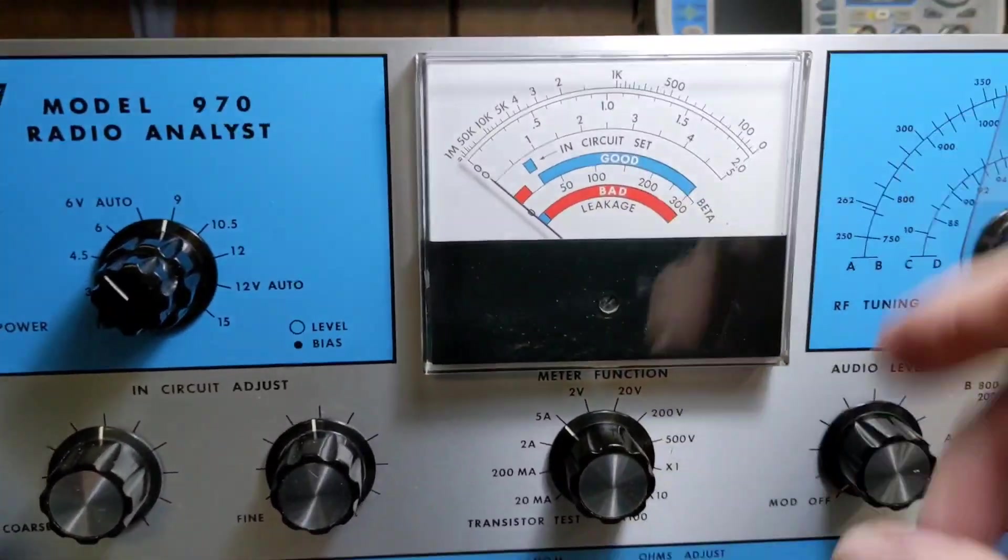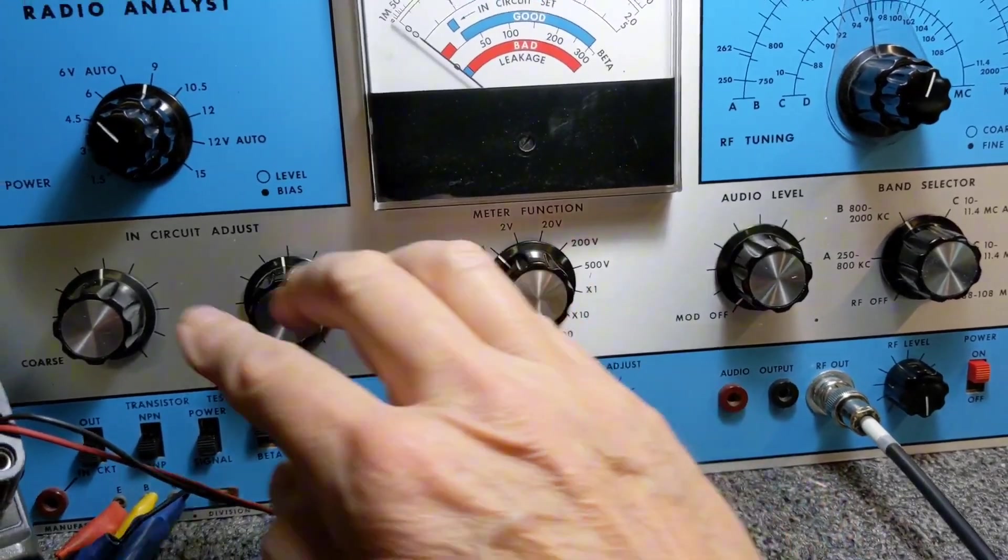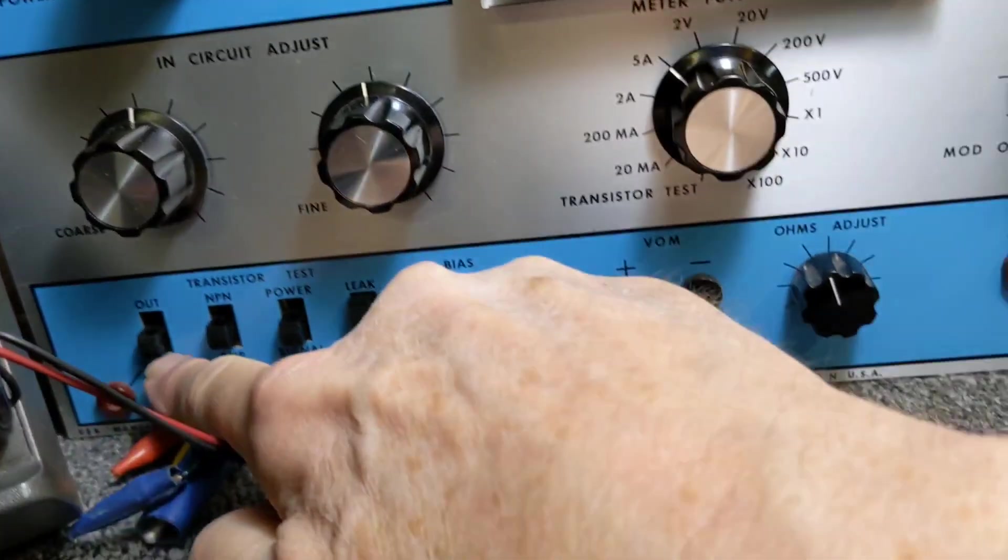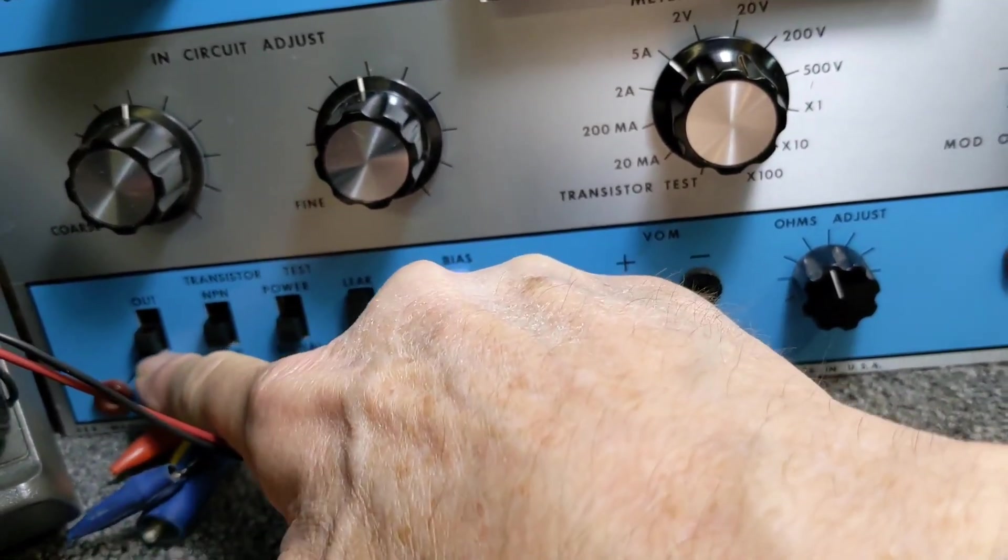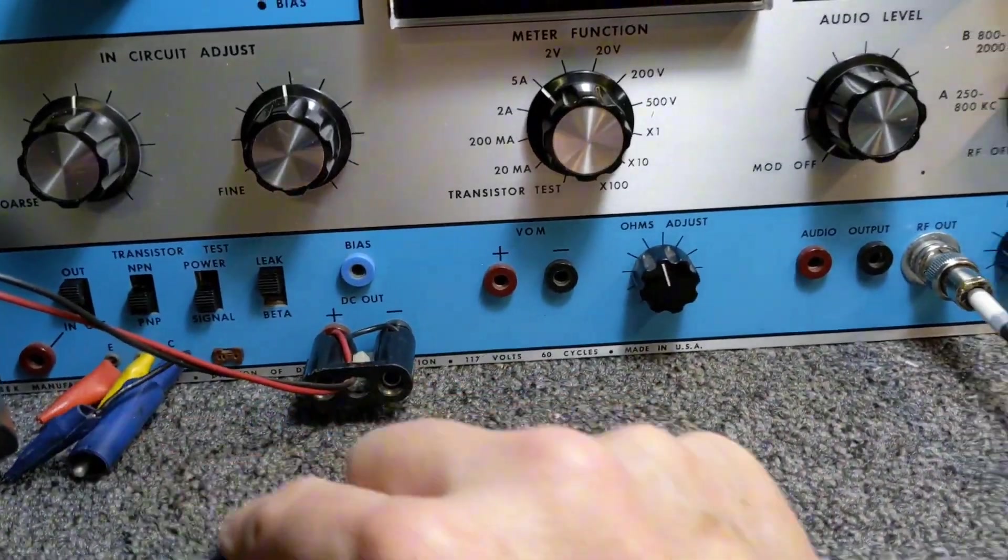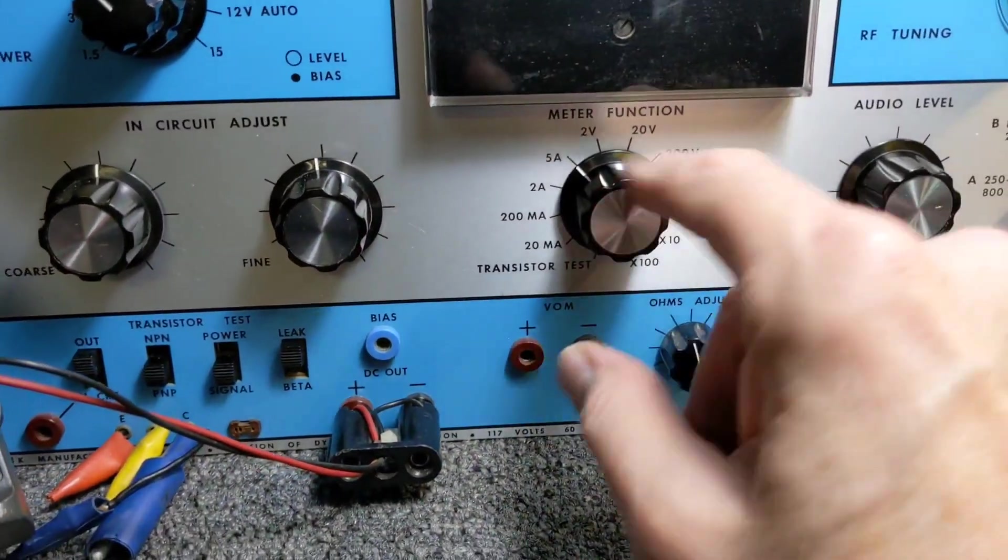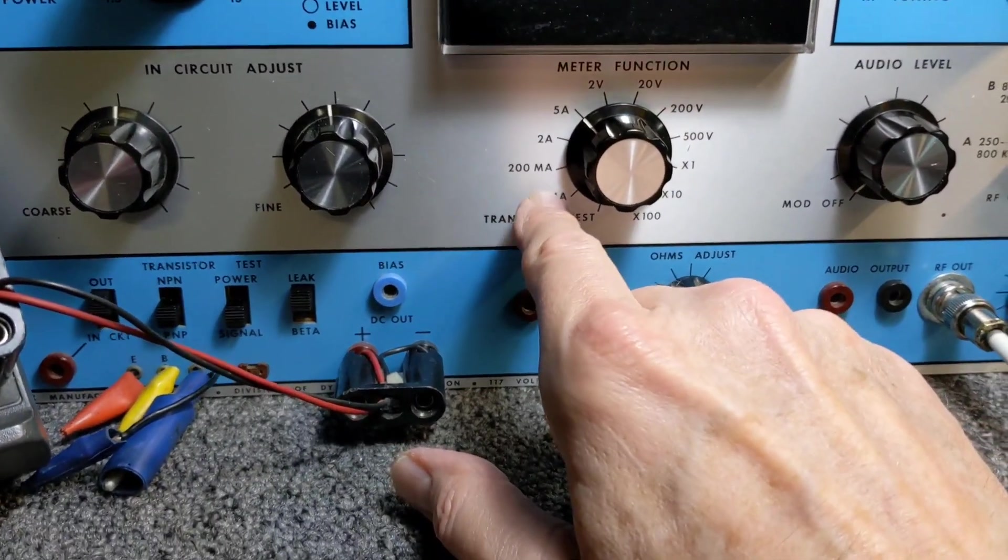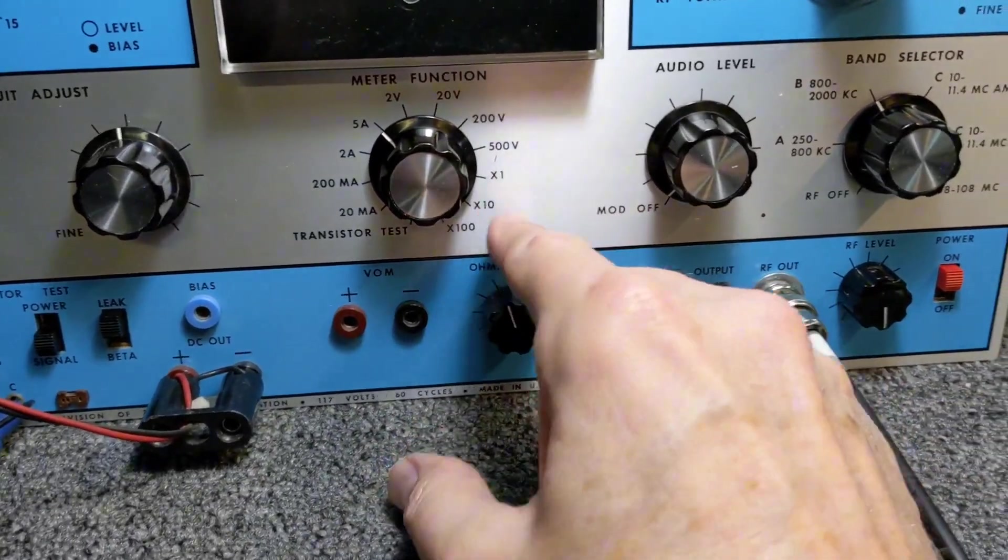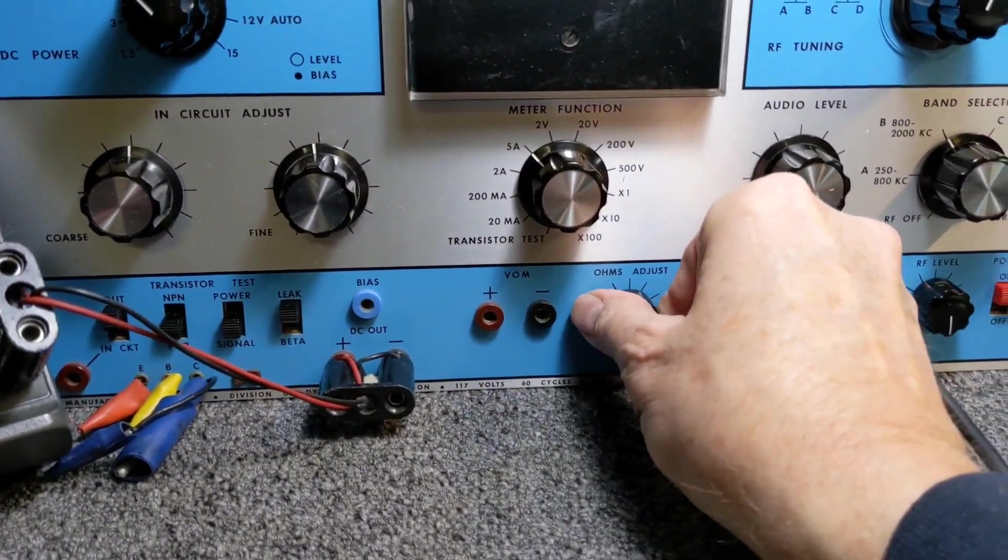Moving along, it's got the meter in the center. It does a transistor test. These two knobs are for the in-circuit. You move this knob to in-circuit or out-of-circuit, and you could do your transistor testing. A little old school, but it works. It also, you can do current. It's a volt ohm meter. And you can measure your voltage. And if you needed an ohm meter, you've got it here as well. And your ohms adjust.